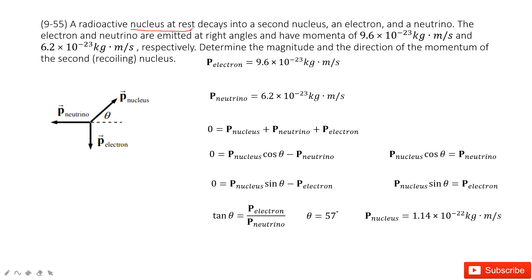And this nucleus decays into a second nucleus, electron and neutrino. So it just decays into three parts: one, two, three.